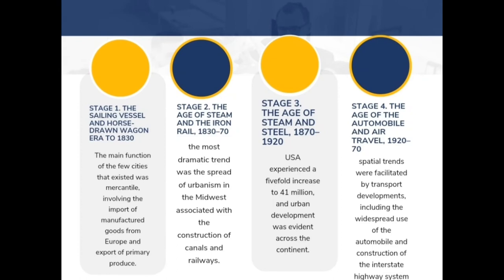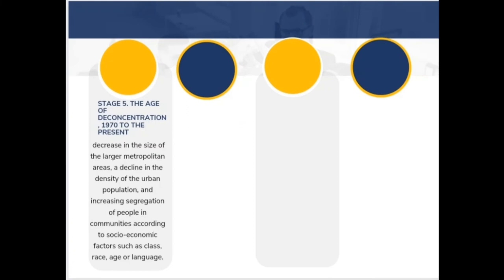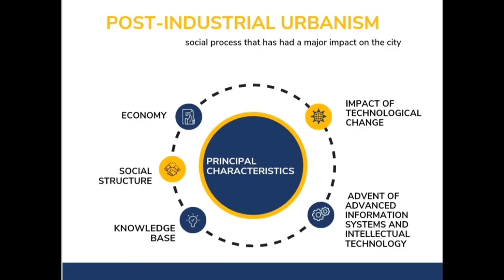Stage 3, the age of steam and steel, 1870 to 1920: the urban population of the U.S.A. experienced a five-fold increase to 41 million, and urban development was evident across the continent. Stage 4, the age of automobiles and air travel, 1920 to 1970: there was an increase from 47% to 70% of people living in urban places. Stage 5, the age of deconcentration, 1970 to the present: there is a decrease in the size of larger metropolitan areas, a decline in the density of the urban population, and increasing segregation of people in communities according to socioeconomic factors such as class, race, age, or language.